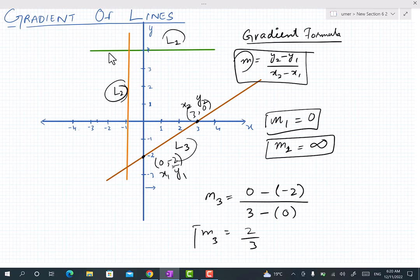So this is the value of m3. It means the slope of line L3 is two over three, and that is how we calculate gradient of a line. Hope you understand this, and if there is any query, ask me.